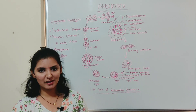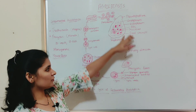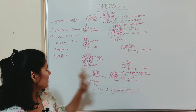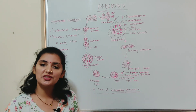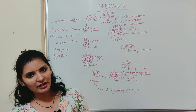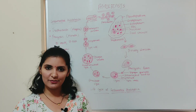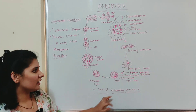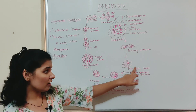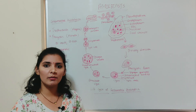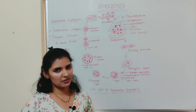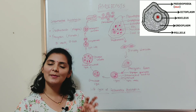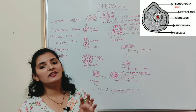Now let me discuss the life history of Entamoeba histolytica. This is a diagram showing the life cycle of Entamoeba histolytica. Entamoeba histolytica is monogenetic in nature, meaning it requires only one host to complete its life cycle, and that host is humans. The life cycle begins with the precystic form, since it is in this form that infection spreads from one person to another. Under certain circumstances, this precystic form remains small and lives in the lumen of the intestine.